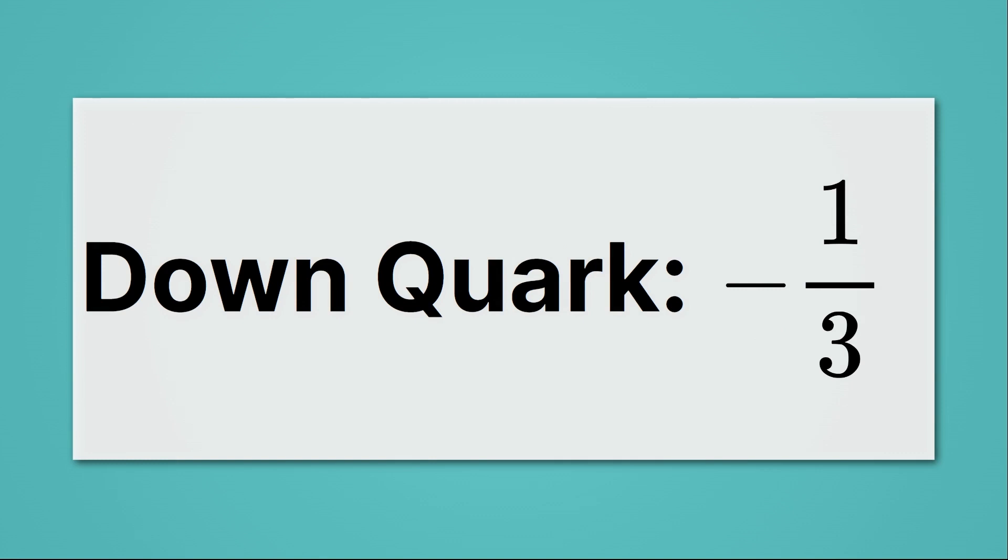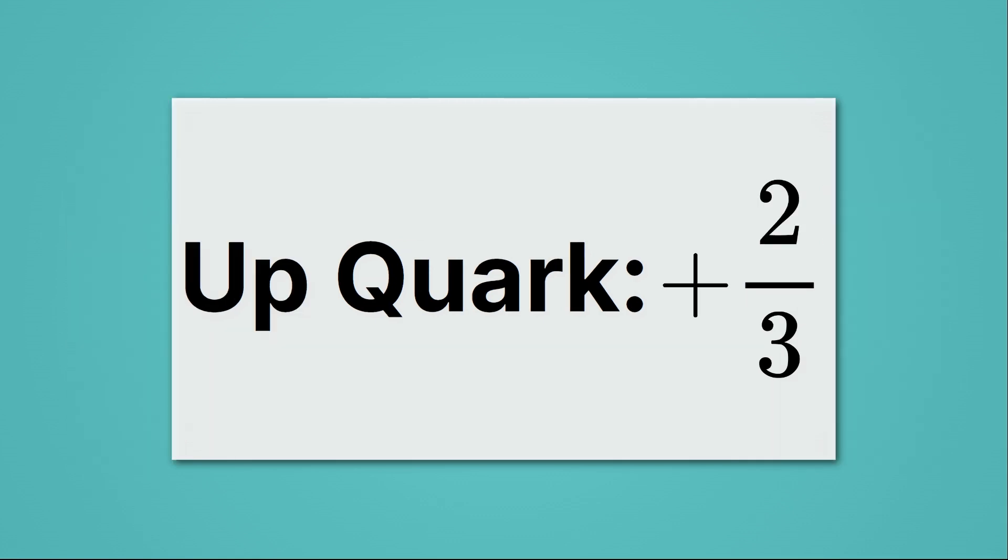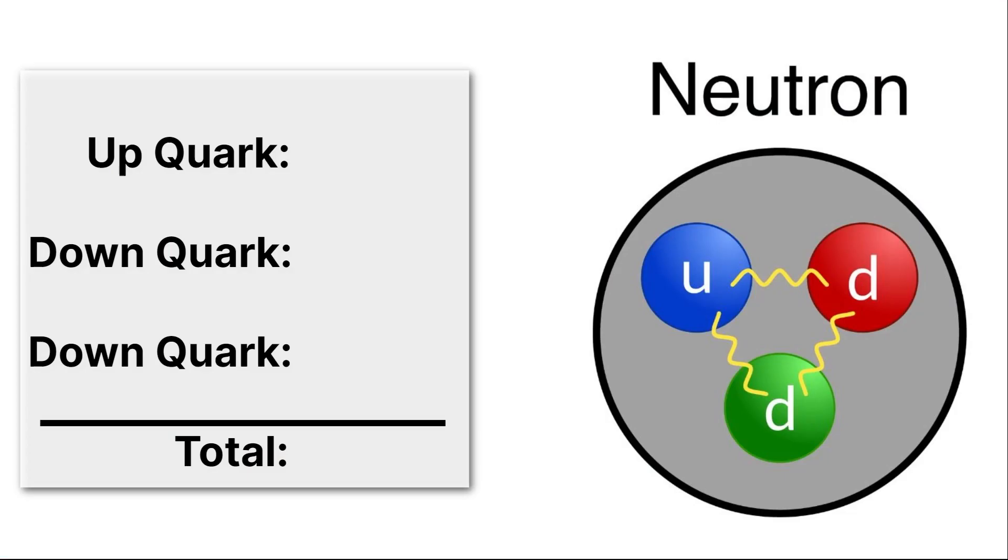A down quark has a charge of minus one-third, while an up quark has a charge of plus two-thirds. With that in mind, let's take a look at the neutron and consider the total charge. Remember that neutrons should be neutral, and it has one up quark and two down quarks. The up quark is plus two-thirds, and the down quark is minus one-third. So then we have another down quark, also at minus one-third. When we take plus two-thirds, we subtract one-third, and then another third, we get zero. So overall, the charge on the neutron is zero, even though the quarks that make it up actually do have charge.